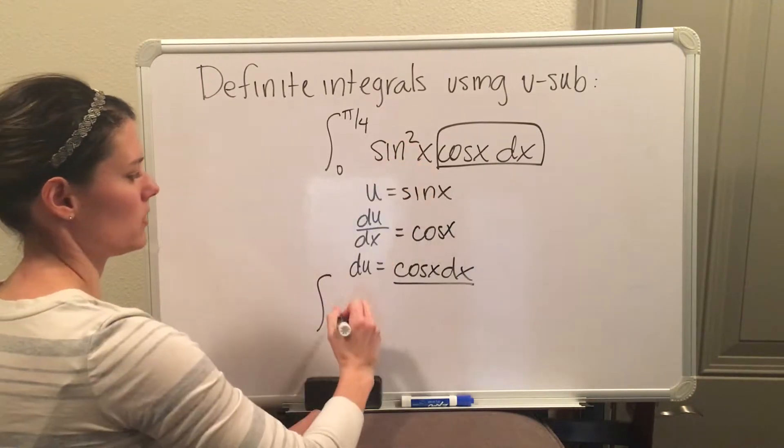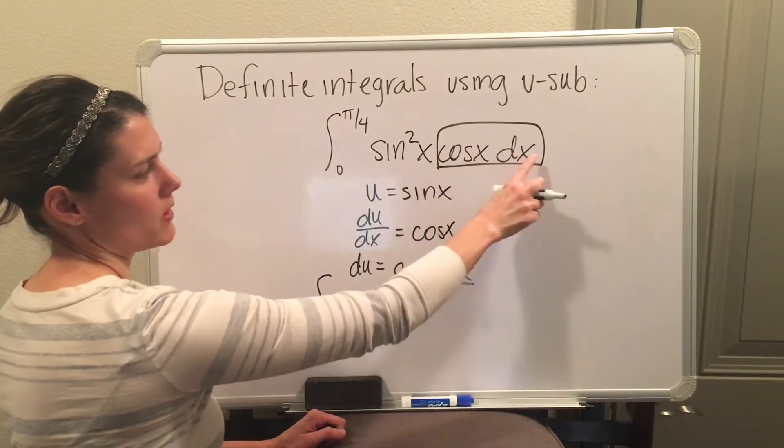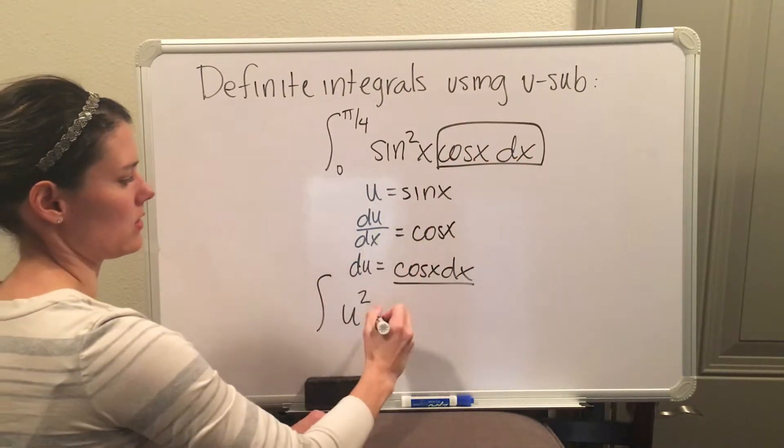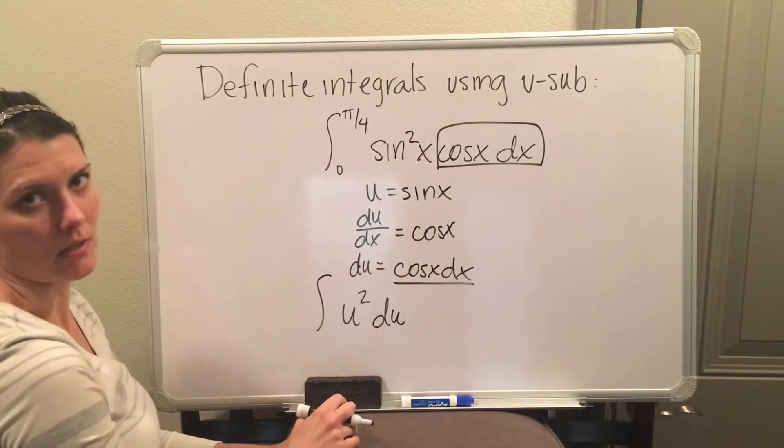Sine of x is now u, but you still include the power, so it's going to be u to the power 2. And then this whole part of the trig function here is going to be gone, and I'm just going to replace it with du. So this is going to be your function in terms of u.